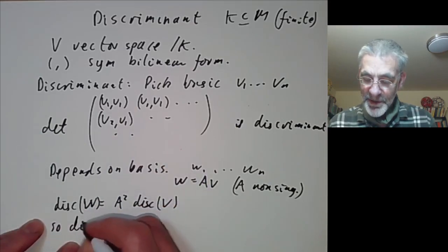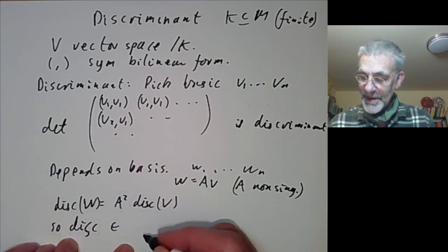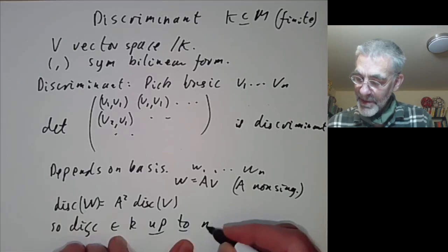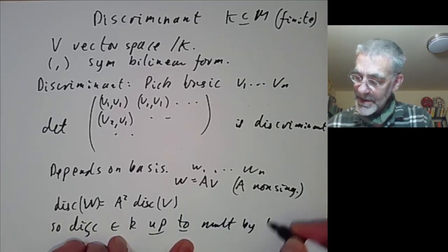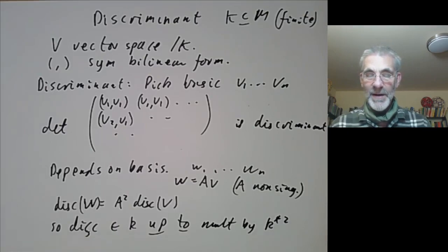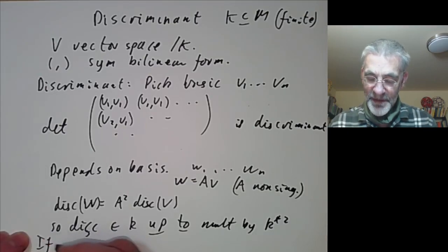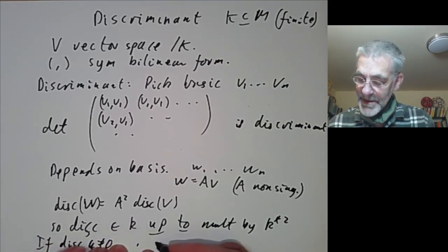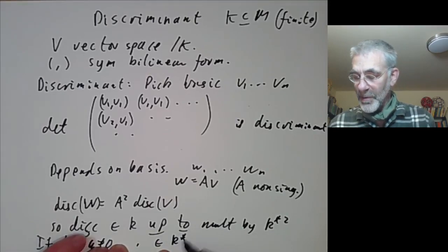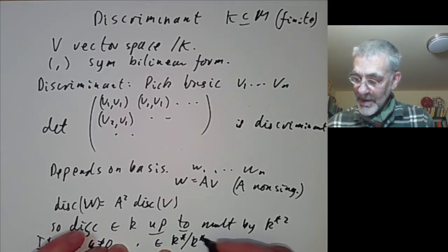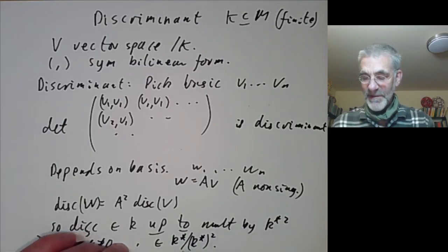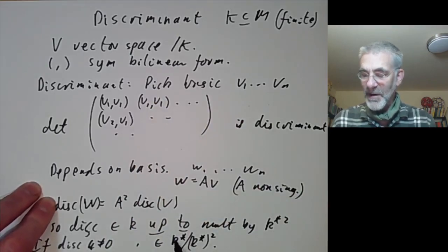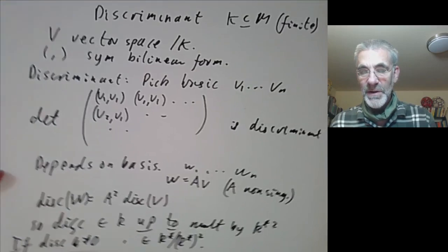So the discriminant is a well-defined element of k up to multiplication by squares of non-zero elements of k. If the discriminant is non-zero, then it's a well-defined element of k* modulo the squares of elements of k*. So it gives you an invariant of a symmetric bilinear form, taking values in non-zero elements of k modulo squares.